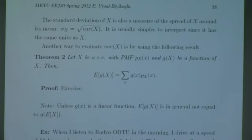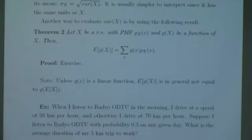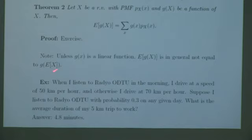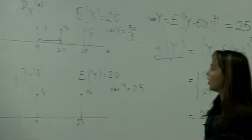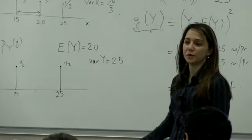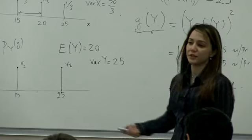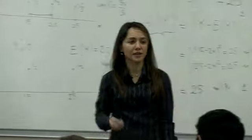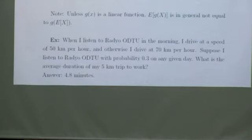Here's an example showing that unless g is linear, the expected value of g(x) should not be confused with g of the expected value of x. In the morning when I listen to radio auto in the car, I drive at 50 kilometers per hour. Otherwise I drive at 70 kilometers per hour. I listen to radio auto with probability 0.3 on any given day. What is the average duration of my 5 kilometer trip to work?